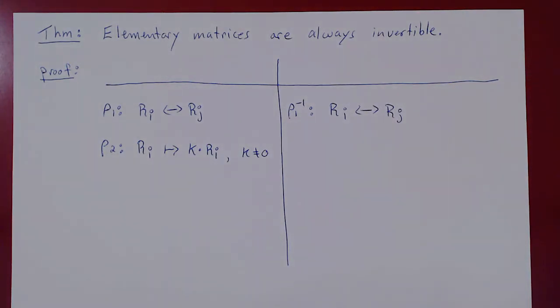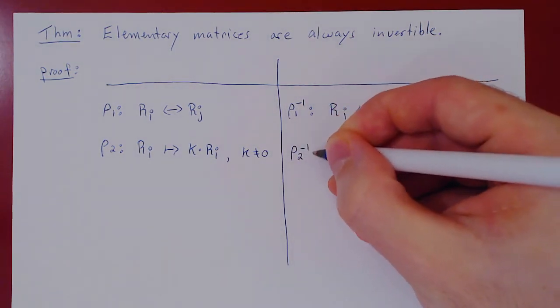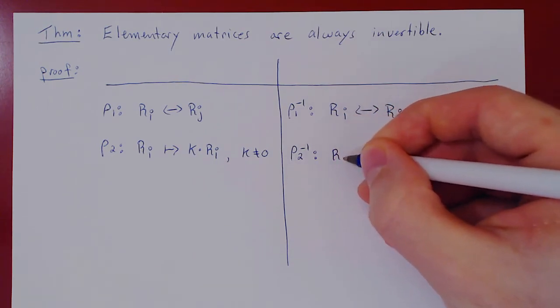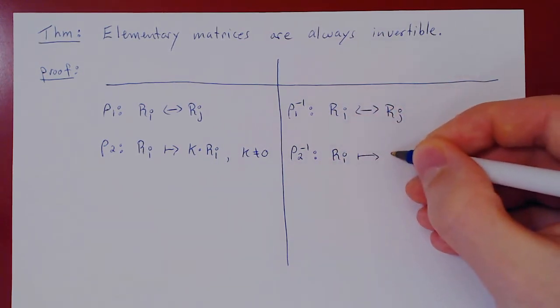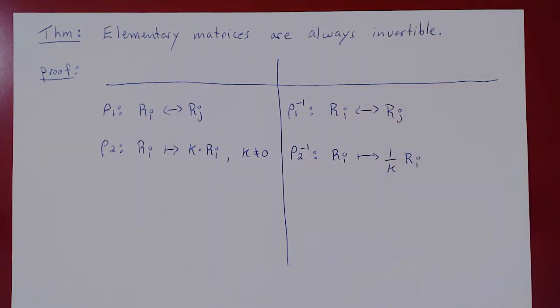but keep in mind k is not zero. How would you invert this? You multiply an entire row by a non-zero constant. The inverse, to get rid of this, is quite simple again. All you have to do is take the new row and multiply it by 1 over k, and you'll fix the problem.